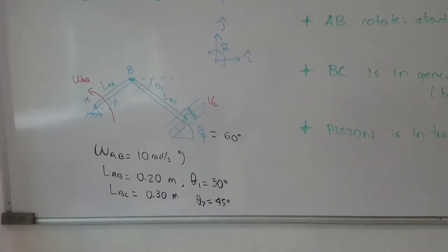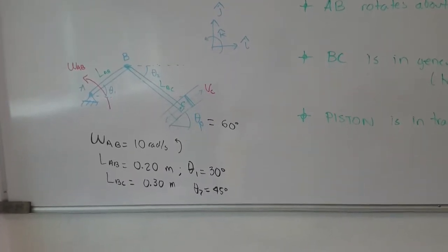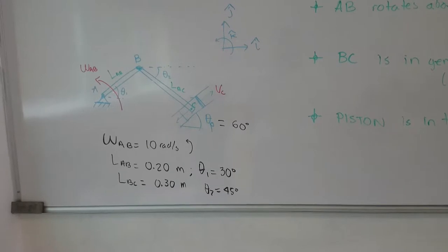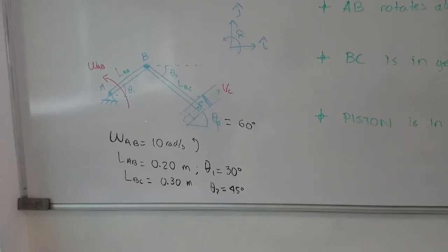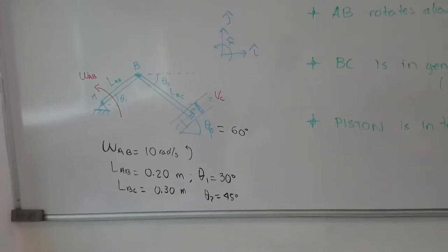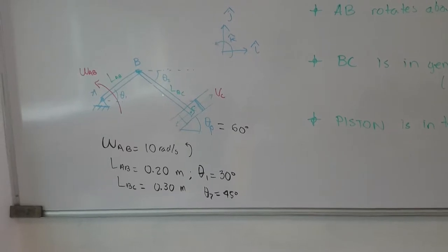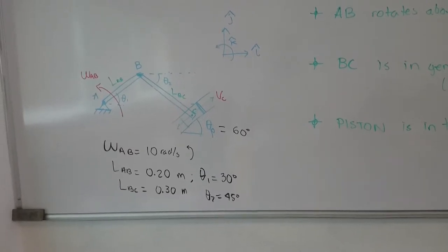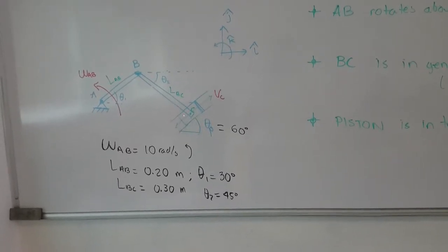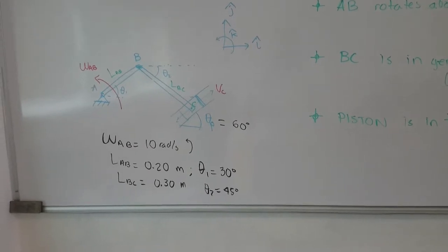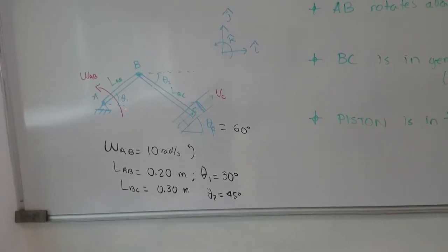Usually in these problems we know one of the angular velocities for bar AB, and we know the distances, the angles. The problem here is to find what is the angular velocity of bar BC connecting the piston to the other bar that is rotating about point A.